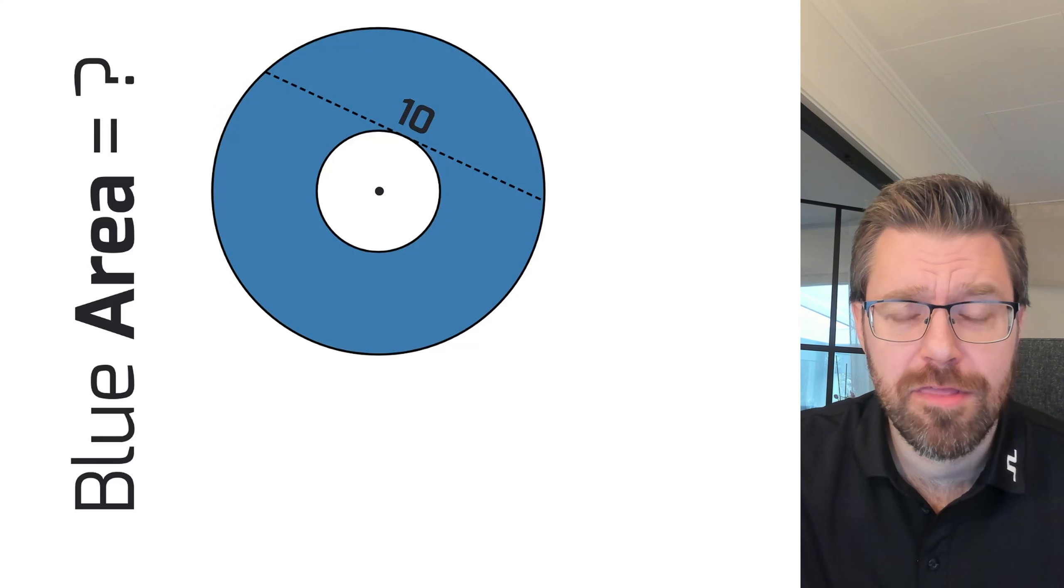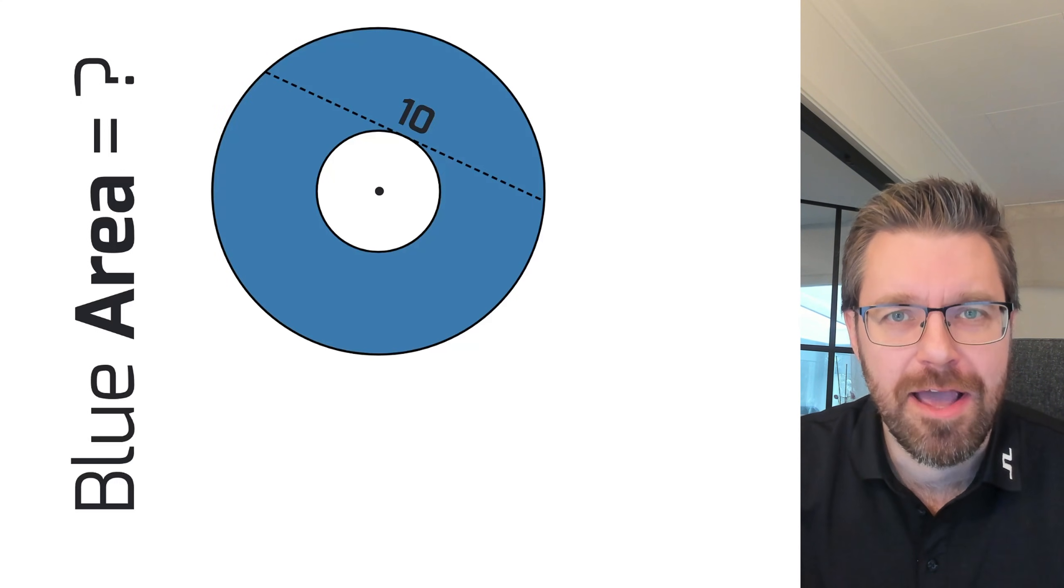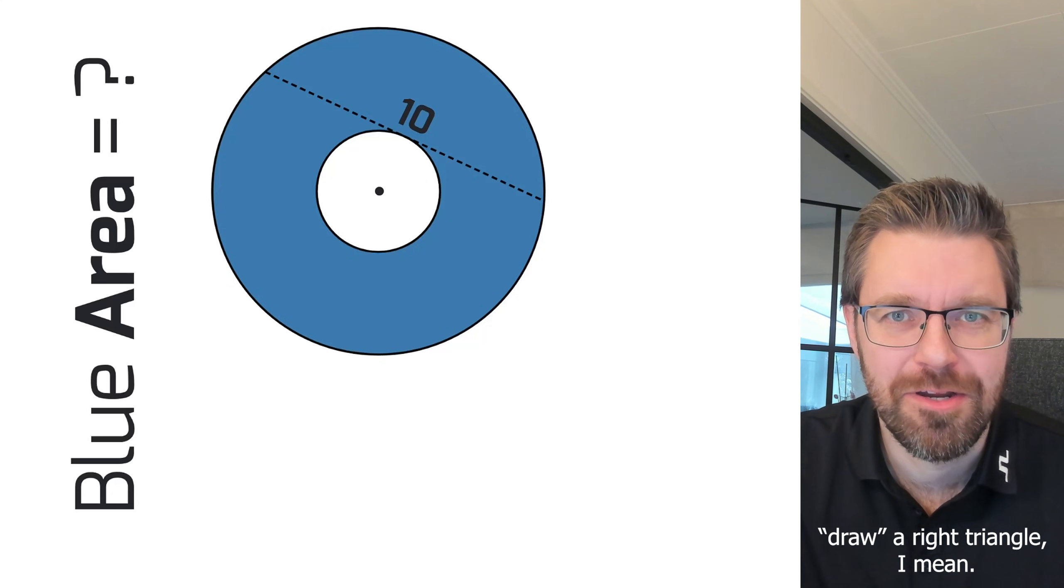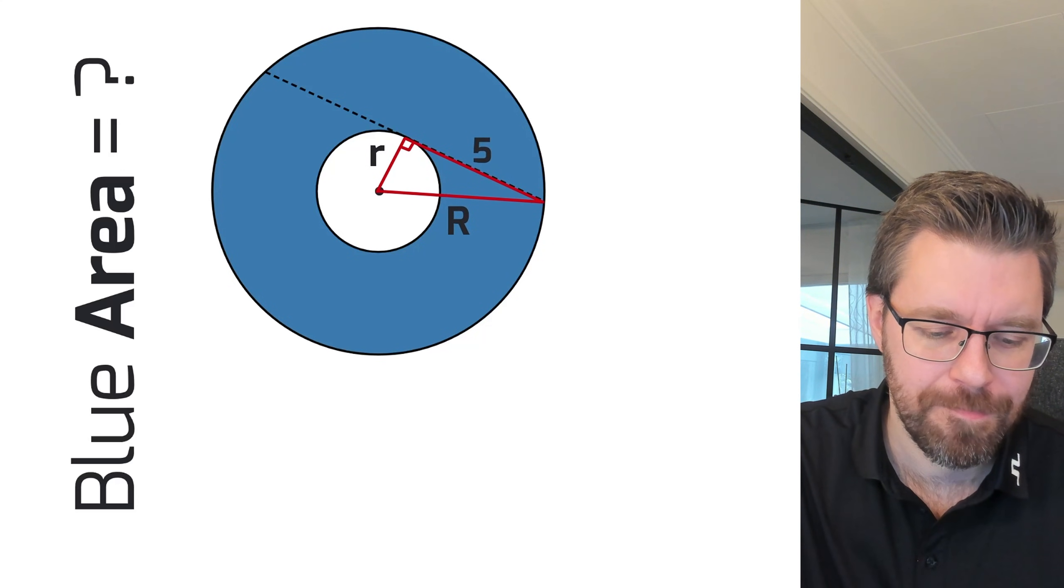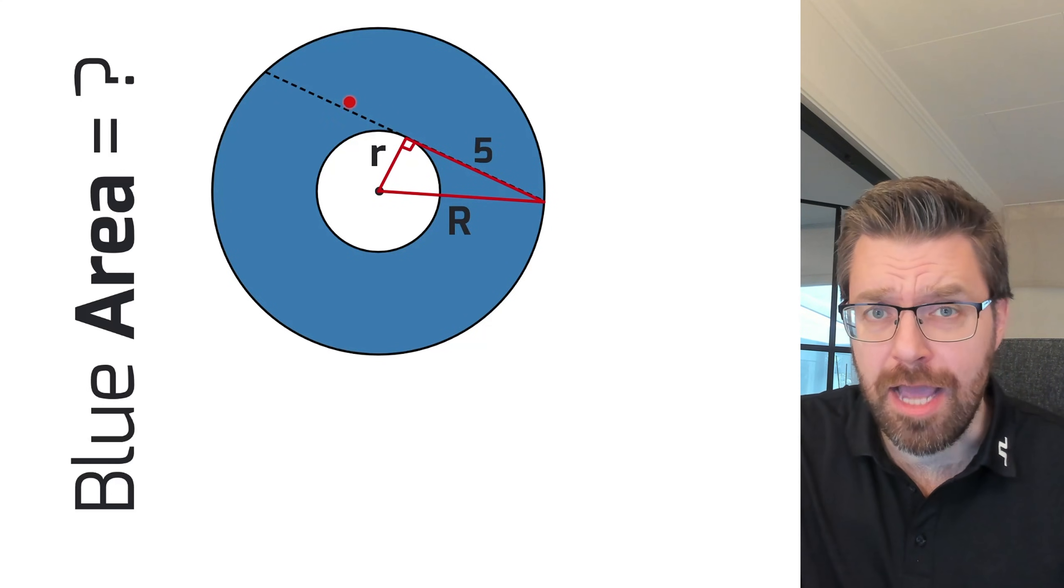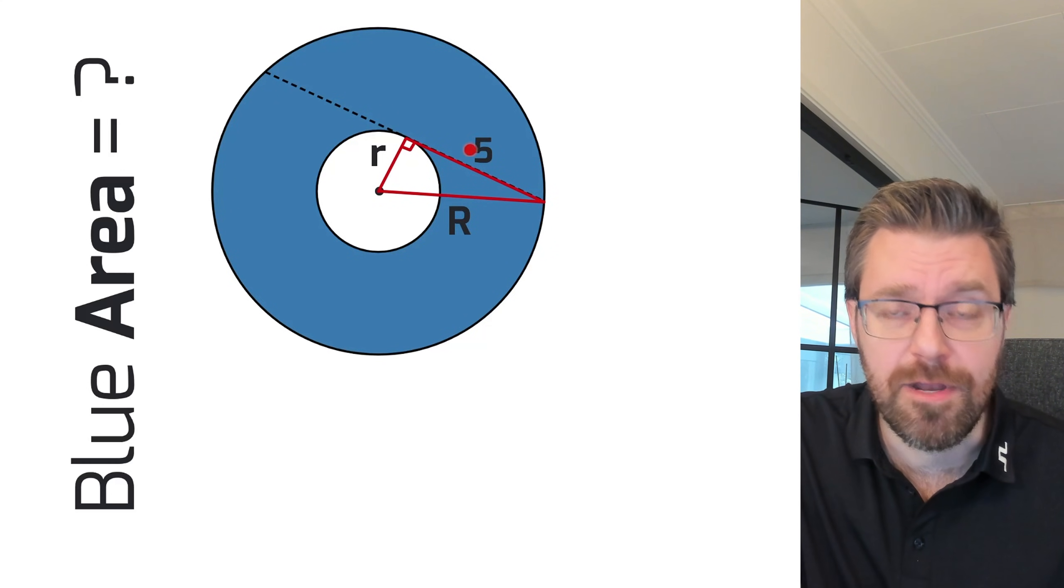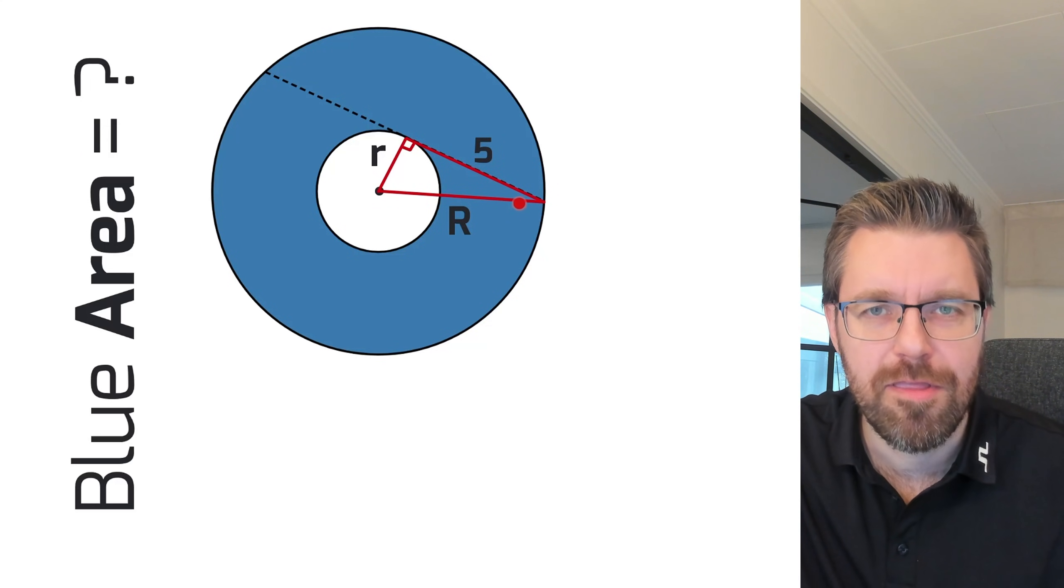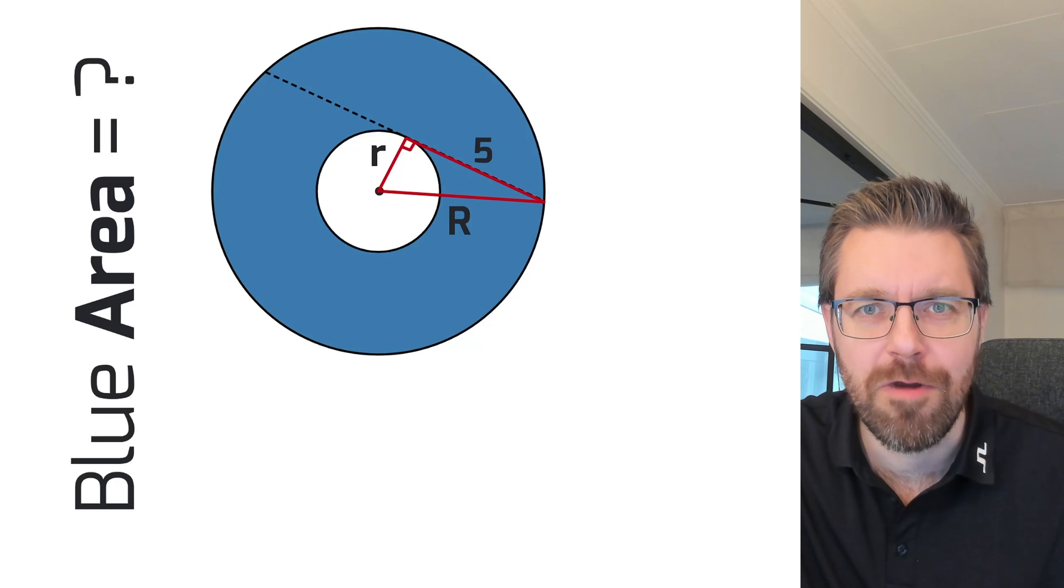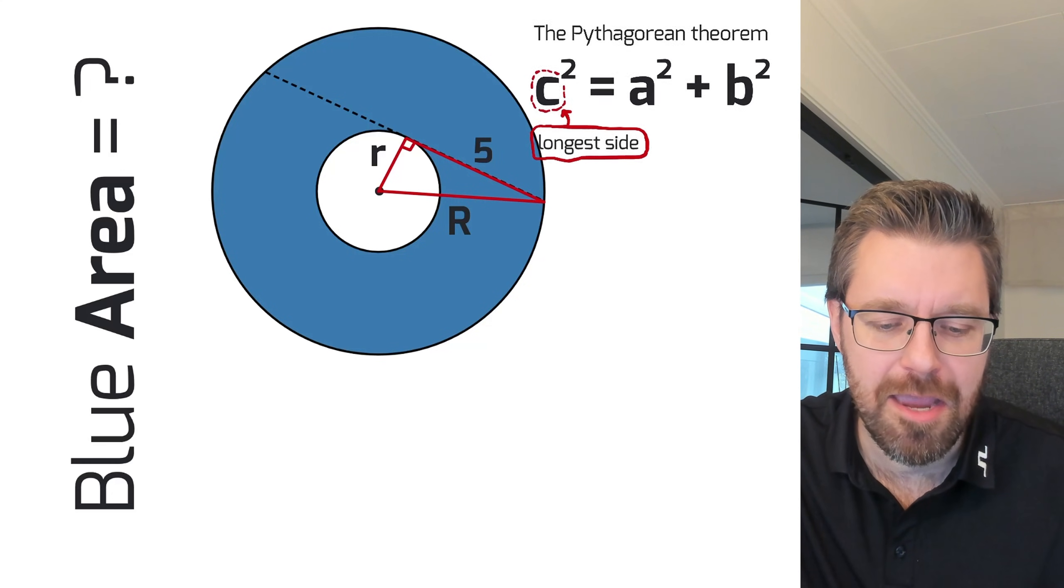The first thing that I will do is write a right triangle in the picture, because I like right triangles. I write it like this. The dashed line was equal to 10, the half of the line equals 5, the little radius equals little r, and the big radius equals big R. And then we can use our best friend, the Pythagorean theorem.